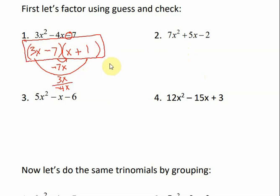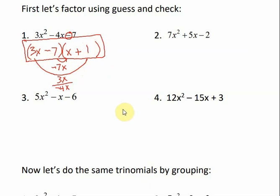Just like in other methods of factoring, if you had written your answer as (x + 1)(3x - 7), as long as the contents of each group are the same, you can switch the order of the groups and it's still correct.